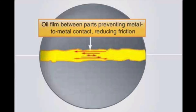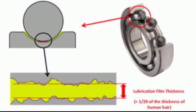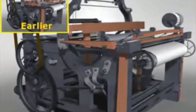When a lubricant is applied between the moving parts of a machine, a thin layer is formed there. The lubricants fill up the irregularities of the surfaces making them smoother. Interlocking of irregularities is avoided to a great extent and movement becomes smoother.